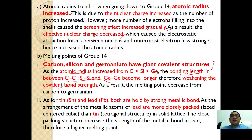As for tin and lead, both of them are held by strong metallic bonds. Lead has a slightly higher melting point compared to tin because its atoms are more closely packed compared to tin.